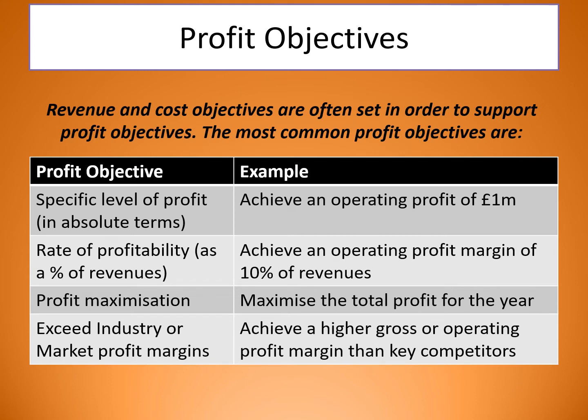Revenue and cost objectives are often set in order to support profit objectives. The most common profit objectives are: a specific level of profit — to achieve an operating profit of £1 million; a rate of profitability — to achieve an operating profit margin of 10% of revenues, so that whether sales go up or down you're still hitting 10% as profit; and profit maximization — to maximize the total profit for the year or to exceed industry or market profit margins, essentially to beat your competitors.